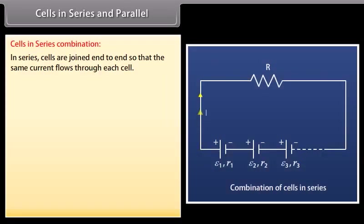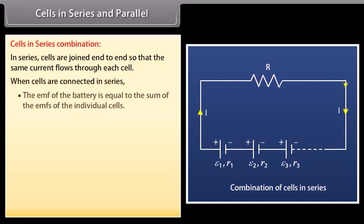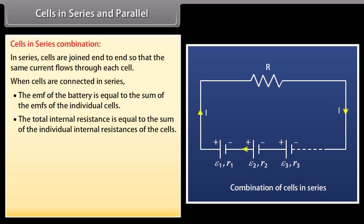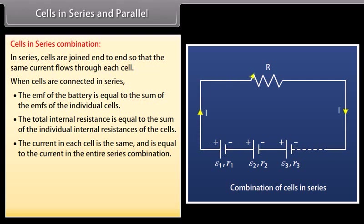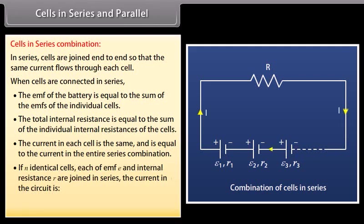In a series combination, cells are joined end to end so the same current flows through each. The positive terminal of one cell connects to the negative terminal of the next. The total EMF equals the sum of individual EMFs, and the total internal resistance equals the sum of individual internal resistances. For N identical cells each of EMF E and internal resistance r in series, the current is NE / (R + Nr).